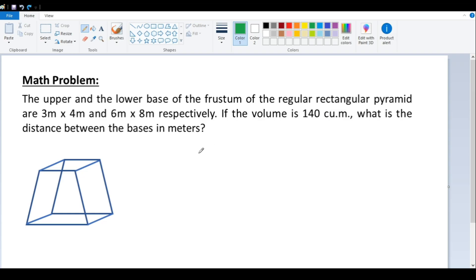Let's read now the problem. The upper and the lower base of a frustum of a rectangular pyramid are 3 by 4 (this one is the upper) and 6 by 8 is the lower, respectively. If the volume is 140 cubic meters, what is the distance between the bases in meters?